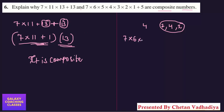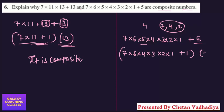Again, you can see you can take out 5 common, so you will get 5(7×6×4×3×2×1+1). You had taken out 5 common. Now you are getting two factors other than the number itself and one, so this is a composite number.